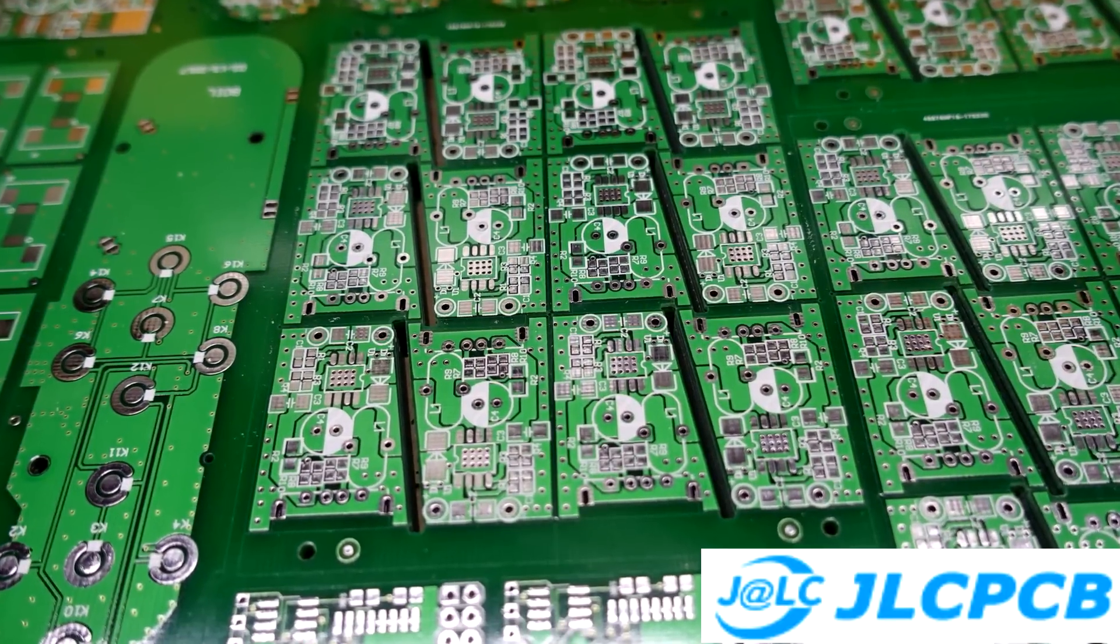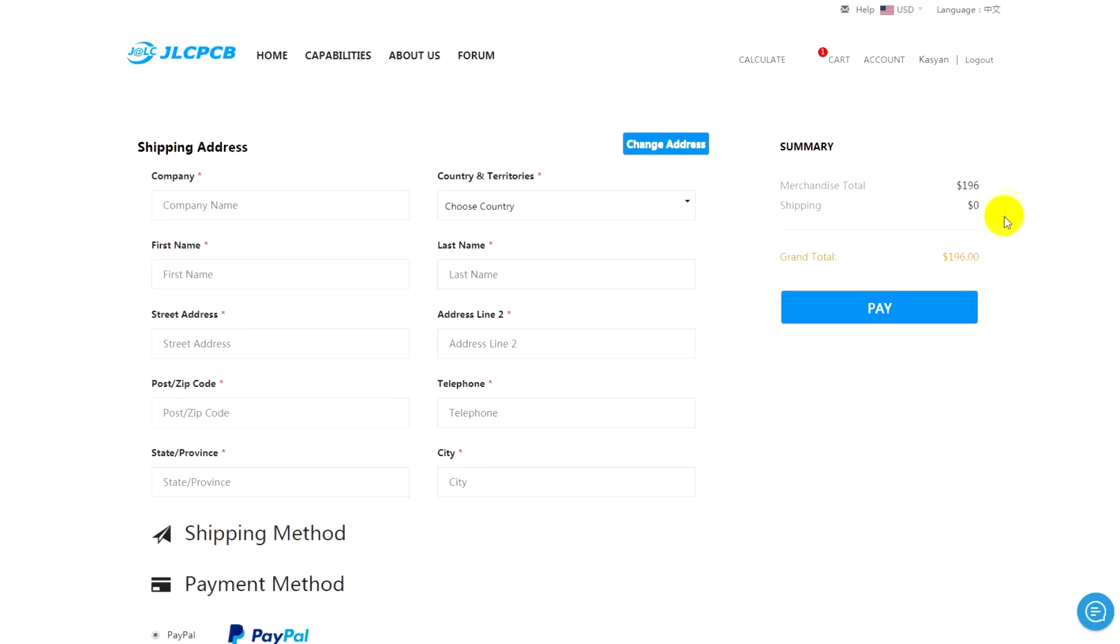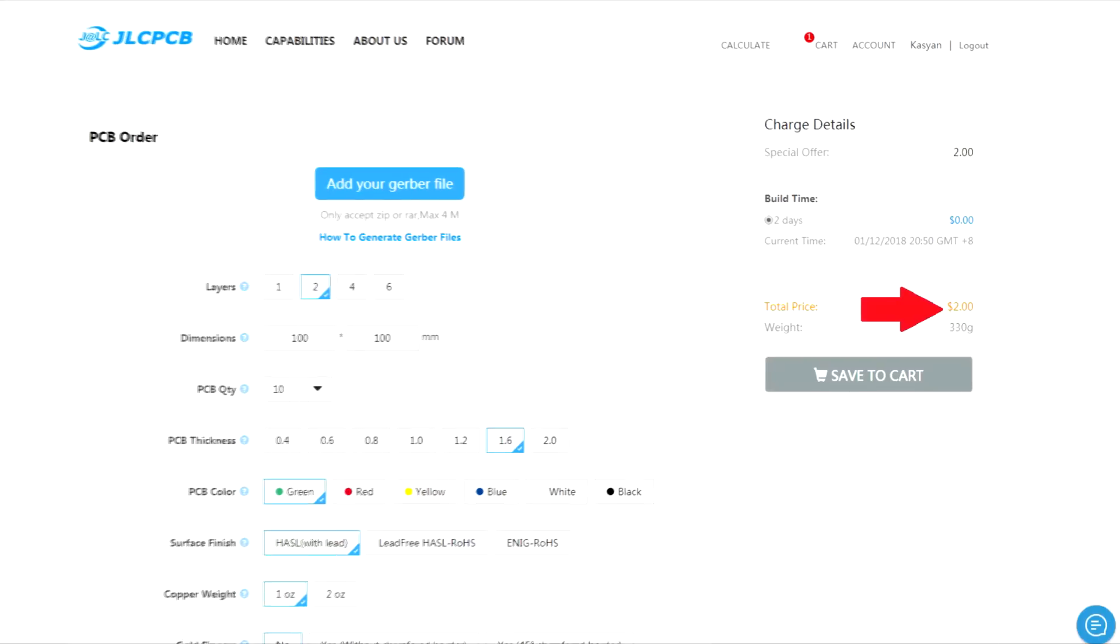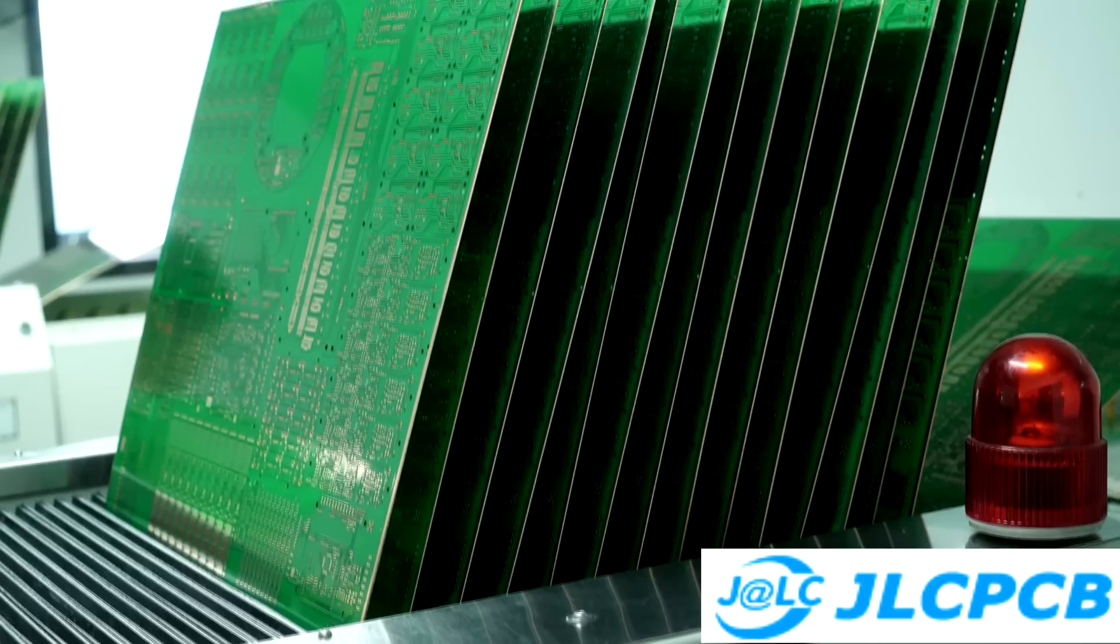The factory will produce printed circuit boards of any shape and complexity. Free shipping is available at the first order. And the price starts from $2 for 10 pieces. A link to purchase of GLCPCB will be found in the description.